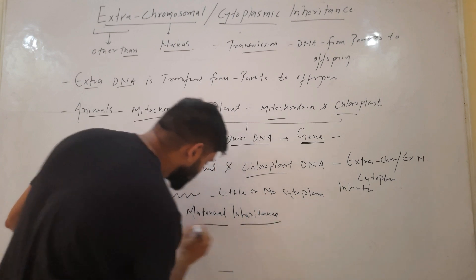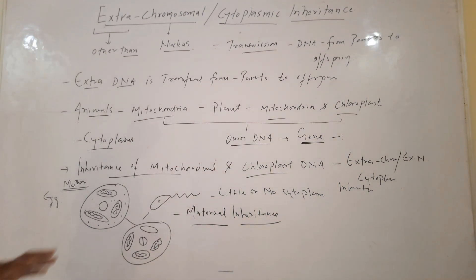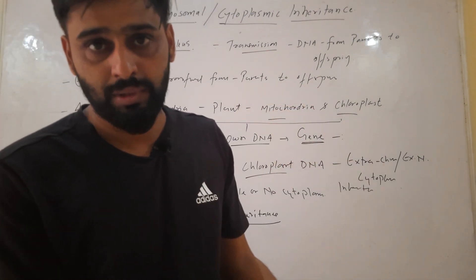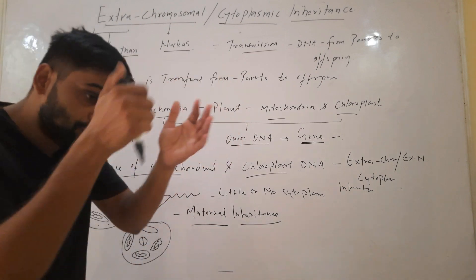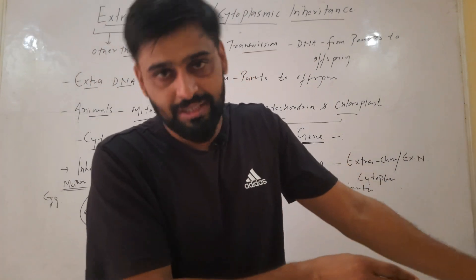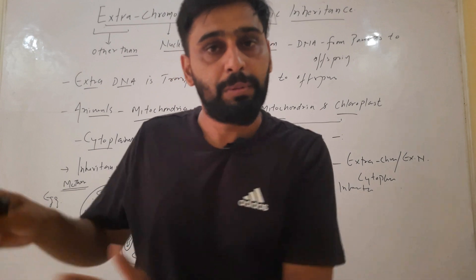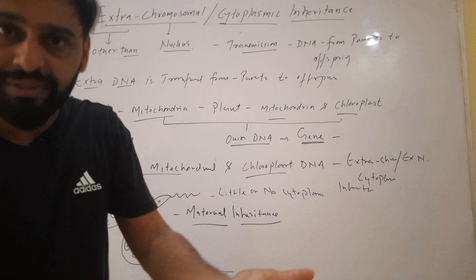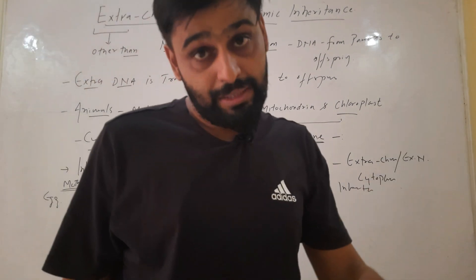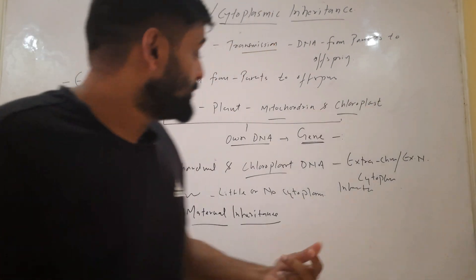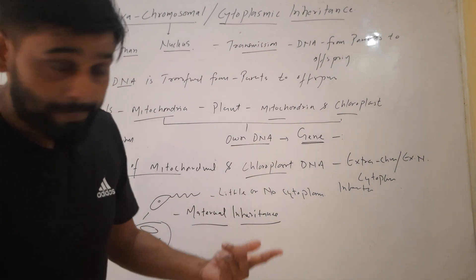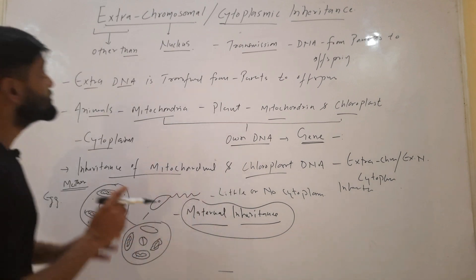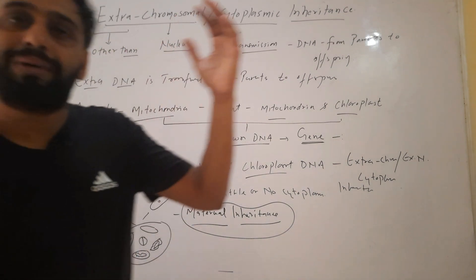So in most cases, this extra chromosomal DNA is inherited from the mother. We know that nuclear chromosomal DNA is biparental — 50% is given by the father and 50% by the mother. But in the case of extra chromosomal DNA, there are some exceptions where it may be biparental or may come from the father only. However, in most cases it is maternal inheritance. This is our extra chromosomal inheritance.